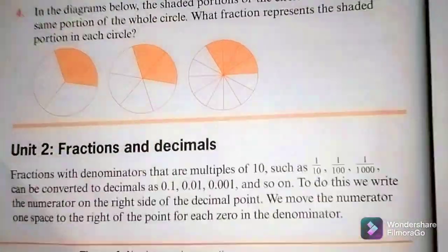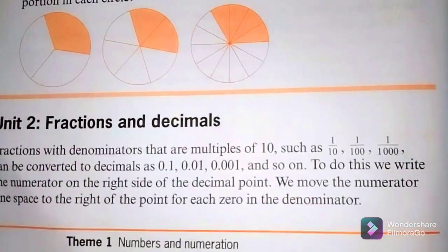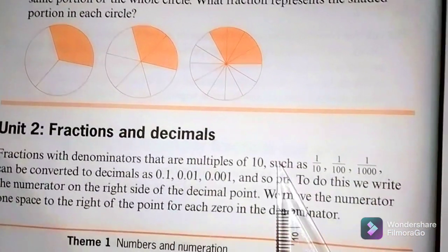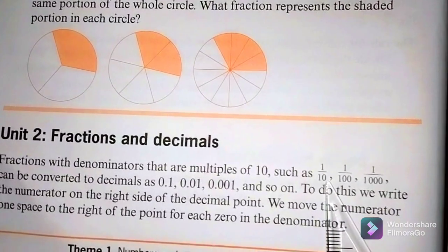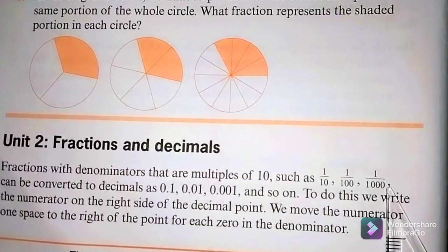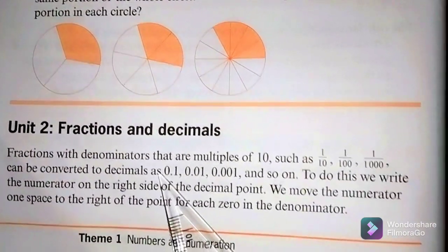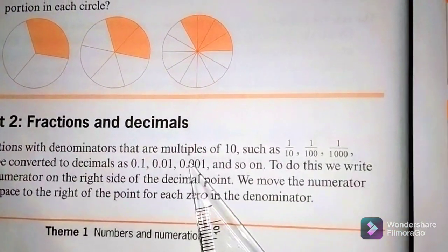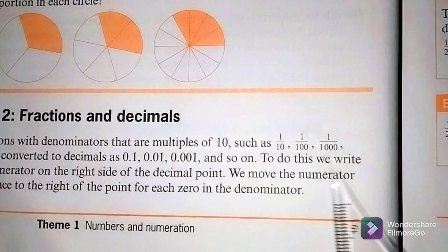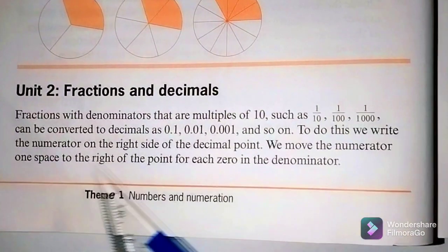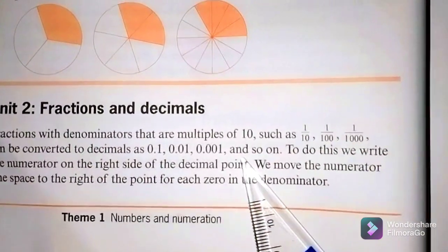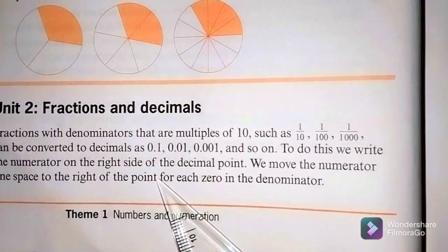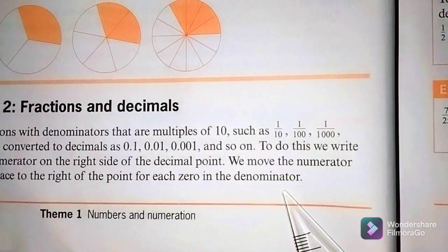Now we move on to fractions and decimals. Fractions with denominators that are multiples of 10 — such as 1 over 10, 1 over 100, and 1 over 1000 — can be converted to decimals: 0.1, 0.01, and 0.001 respectively. To do this, we write the numerator to the right of the decimal point, moving one space right for each zero in the denominator.